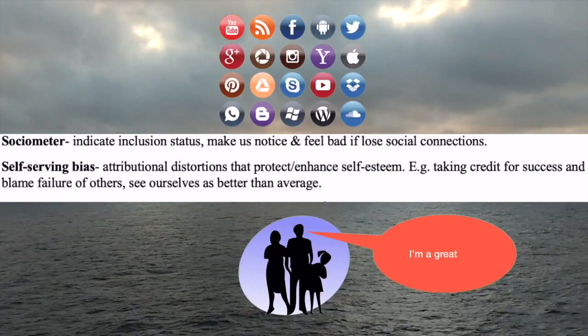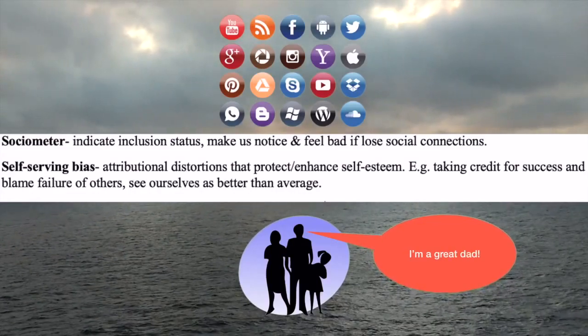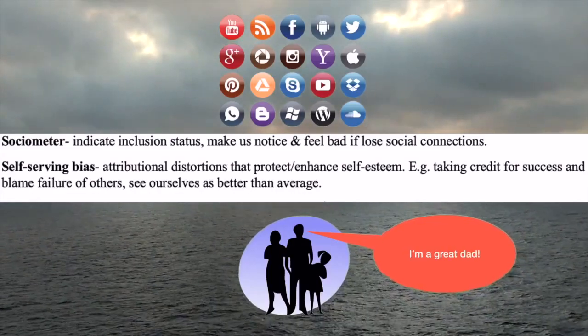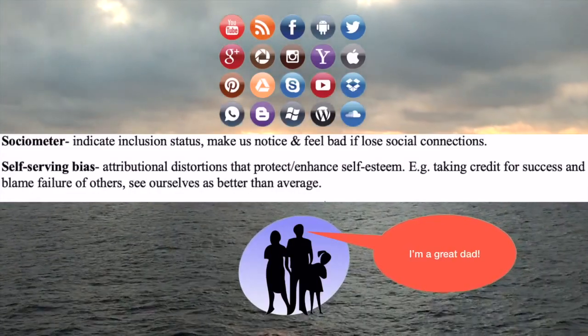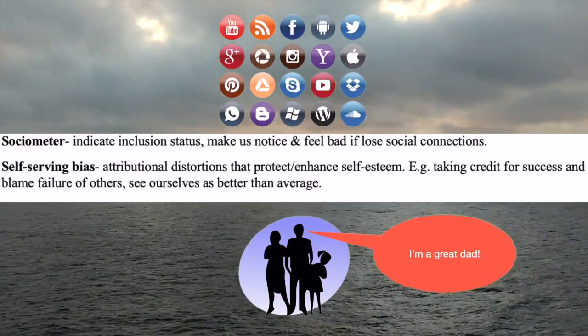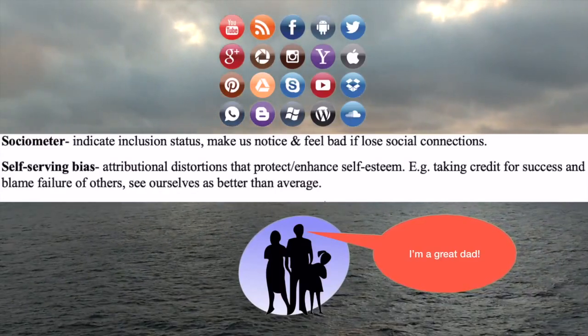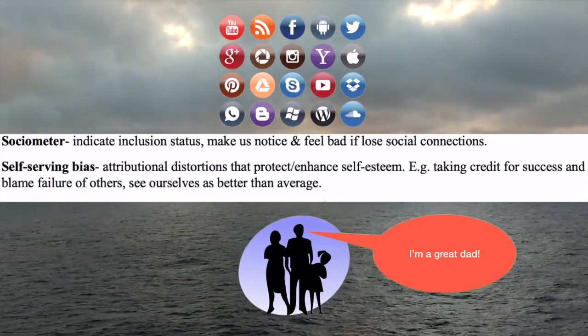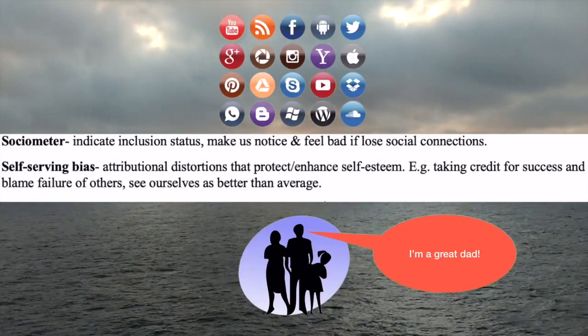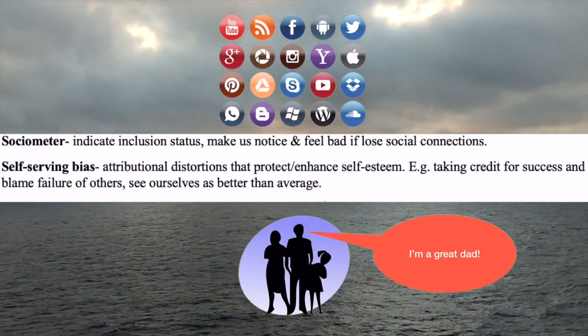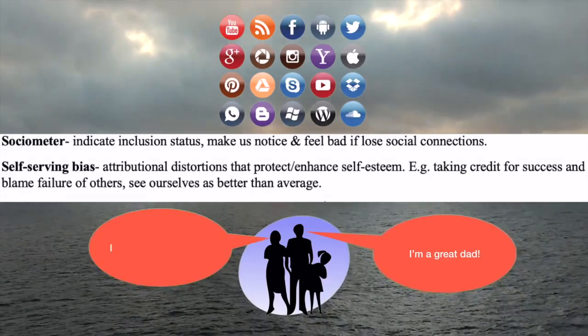Additionally, the sociometer is defined as one's inclusion status — it helps us to measure and makes us notice and feel bad if we lose social connections.